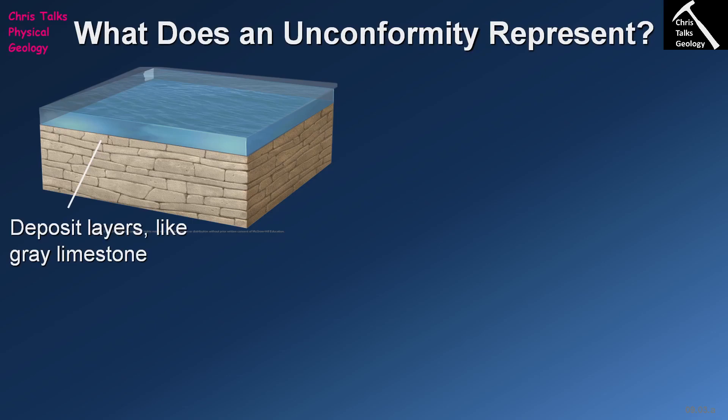An unconformity represents a portion of the rock record that is missing. If you imagine we have a sequence of rocks and during some period of geologic time part of that sequence gets eroded away — it's lost, the rocks are destroyed, they're gone forever. Then new sediments get deposited on top of that erosional surface. At the contact between the two layers of rock, which represents the erosional surface, we have lost rock, and this equates to lost time. This missing portion of our chronological record is referred to as an unconformity.